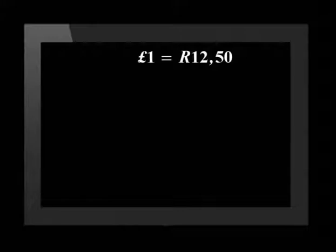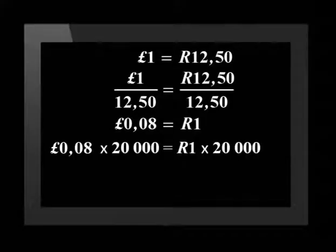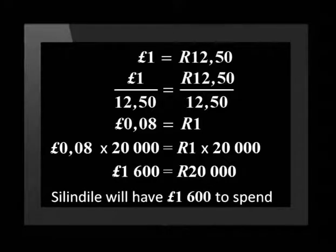First, we need to calculate the value of pounds that one rand can buy. The exchange rate is one pound equals 12 rand 50. To find the value of pounds we buy with one rand, we divide both sides of the equation by 12.50. This means that 0.08 pounds equals 1 rand. The next step is to multiply 20,000 rand by 0.08 pounds, which gives us 1,600 pounds. So Celine Le will have 1,600 pounds to spend in England.